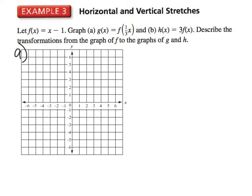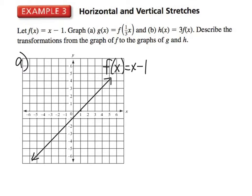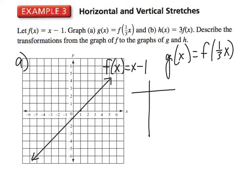Let's start example 3. I'm going to graph f(x) = x − 1. Now, g(x) is going to be f(1/3 x). We start by making a t-table and picking values of x that we can take a third of, so I'll pick −3, 0, and 3.